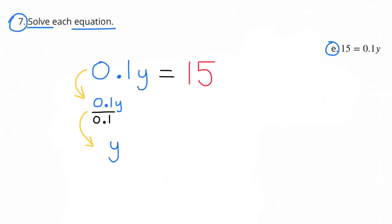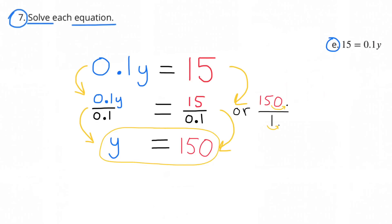E: 0.1y equals 15. Dividing both sides by 0.1: y on the left, and 15 divided by 0.1 on the right. Making both 10 times bigger: 150 divided by 1 equals 150. So y equals 150.